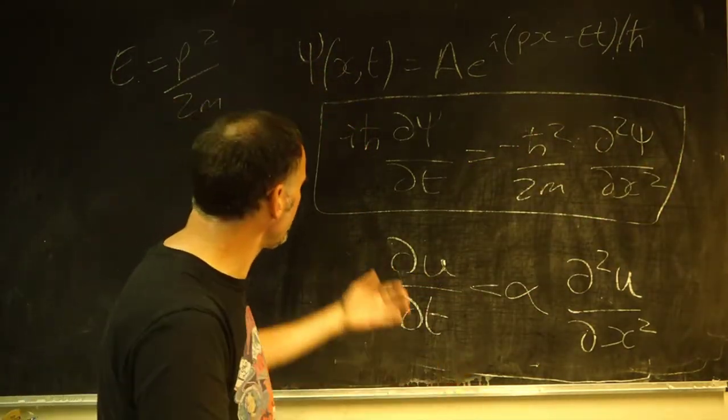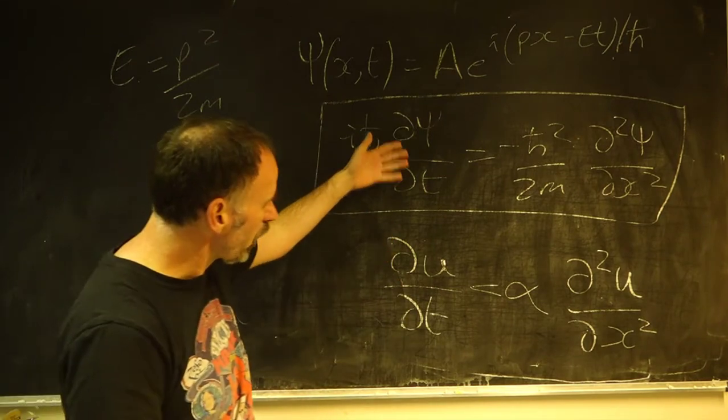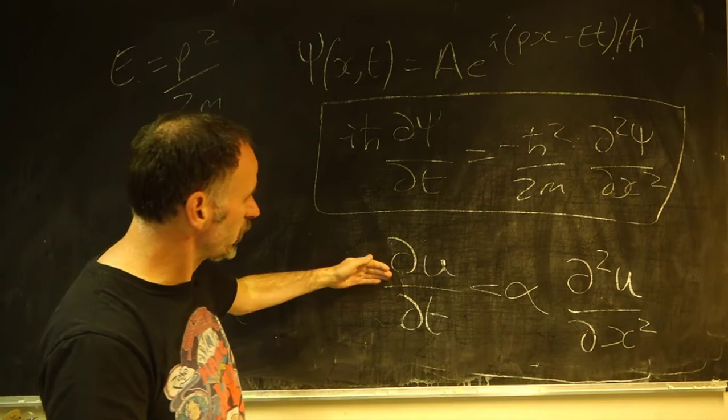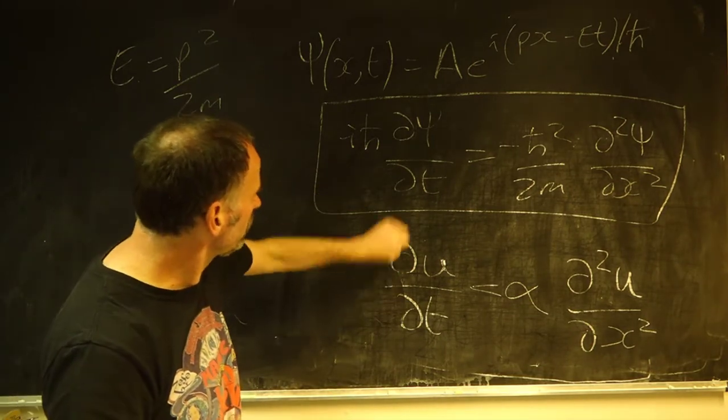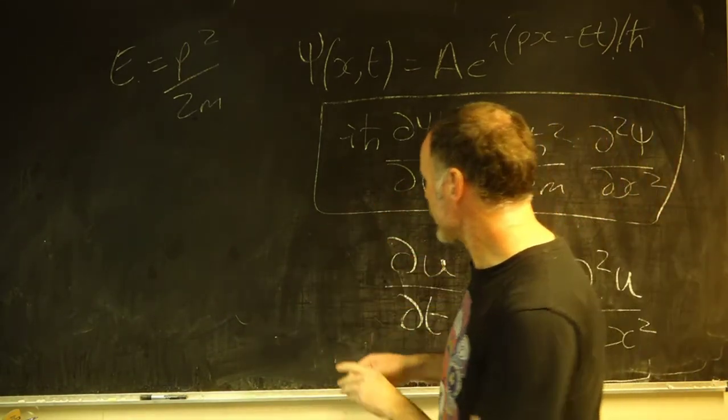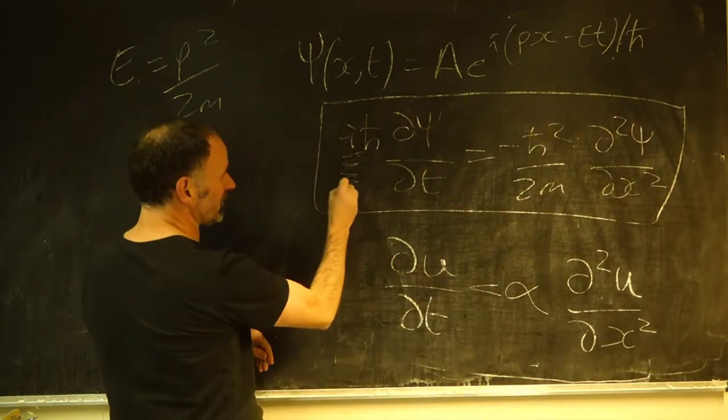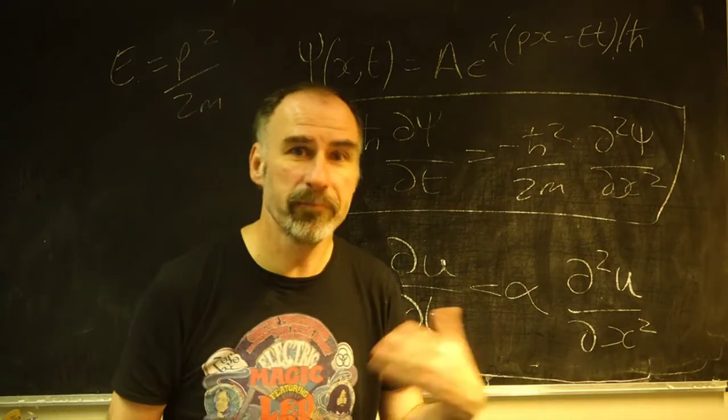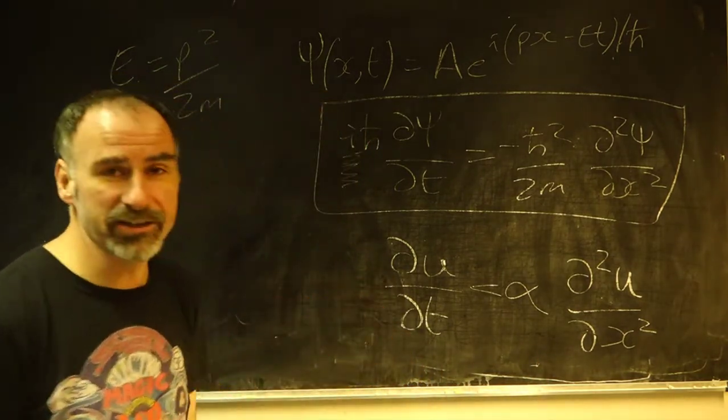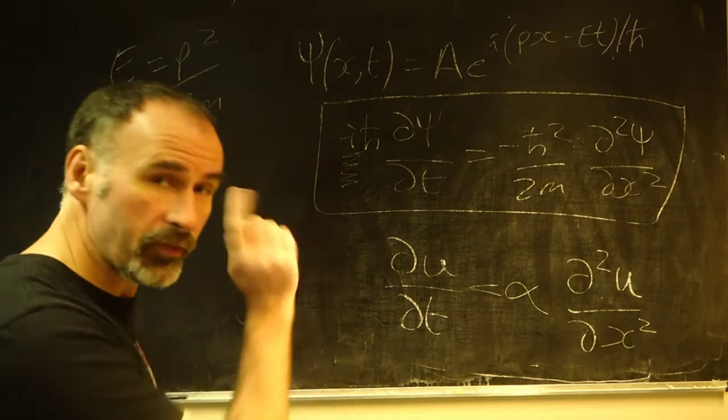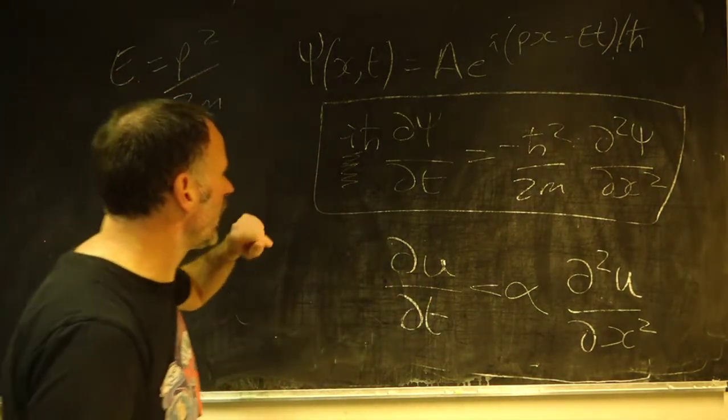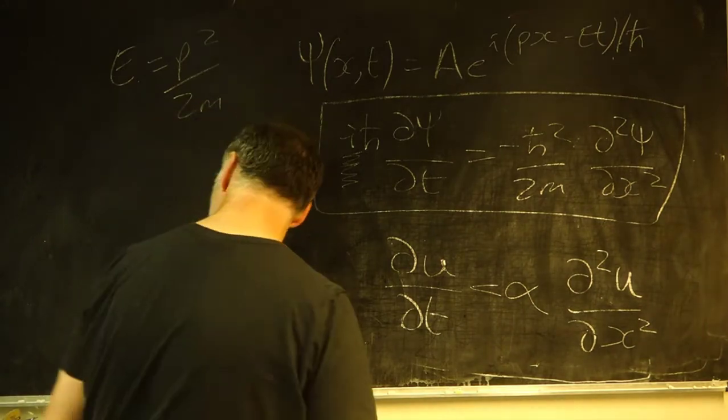So you can see that there are parallels with the diffusion equation, the classical diffusion equation here. In that first derivative of time, second derivative of space, the difference, of course, and a key difference is this nastiness in terms of the square root of minus one imaginary number being in there, which isn't in the classical diffusion equation. We'll be coming back to that parallel between the diffusion equation and the time-dependent Schrödinger equation later on.